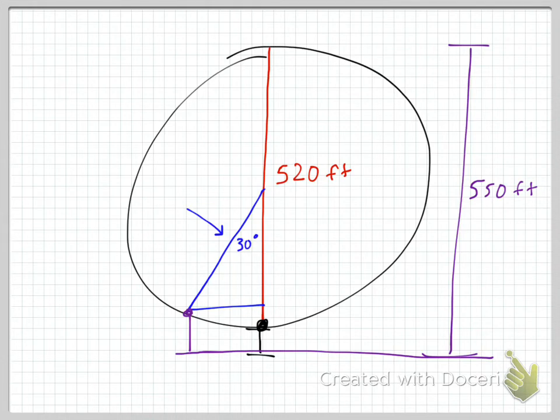And now you can use SOHCAHTOA to find all of the sides of that triangle. That's going to be helpful because once you have that top height, the one I just marked in purple right there, then you can calculate.